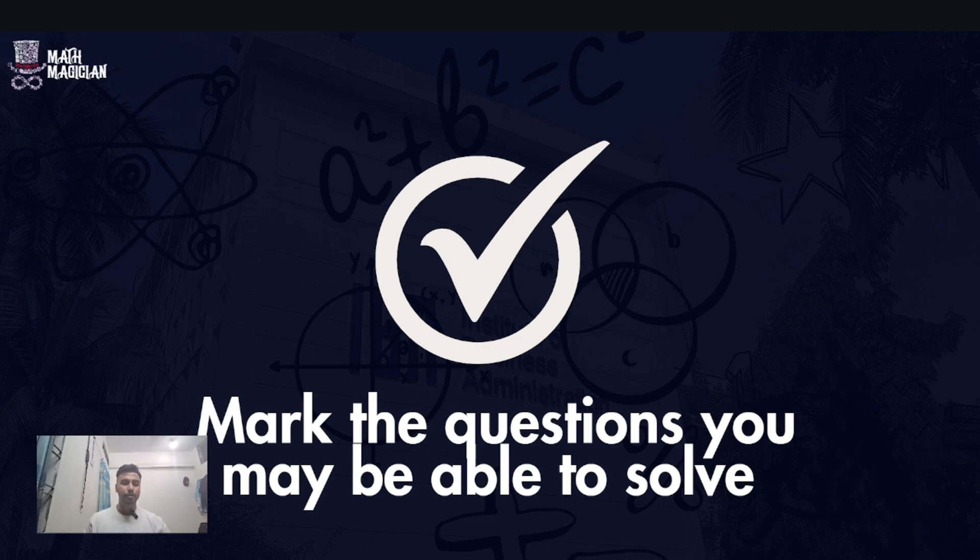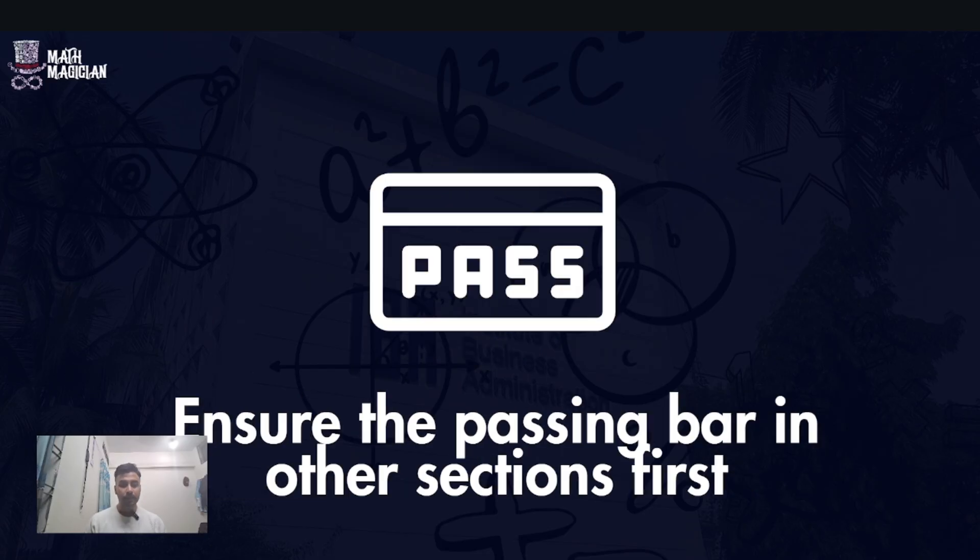The most important tip: ensure the passing bar in other sections first. This will make a significant difference. Make sure you pass in Analytical and English first. If you ensure the passing bar in other sections, you'll have less pressure.